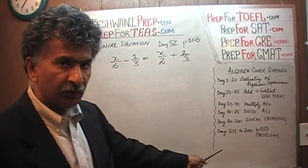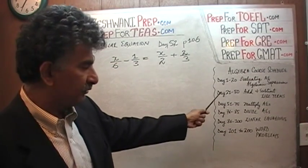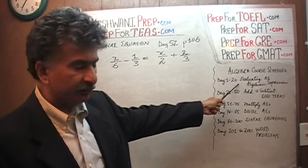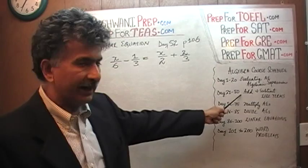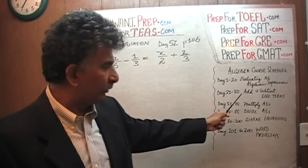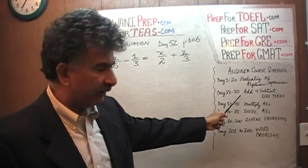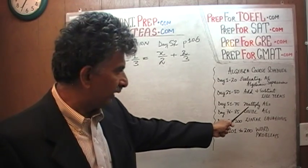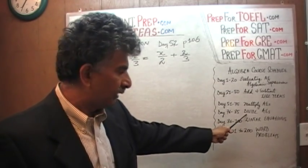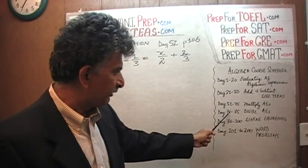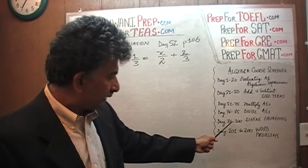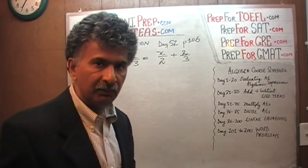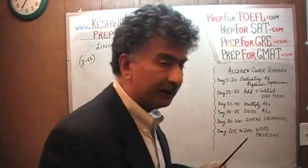Here is the course schedule. You will find these videos on my channel. Just look for algebra videos. The first 20 days we learn how to evaluate algebraic expressions. From day 21 through 50, we learn how to add and subtract algebraic expressions. From day 51 through 75, we learn how to multiply algebraic expressions. Then we learn how to divide algebraic expressions. And then finally, the last 15 days of the first part of the course, day 86 through 100, we learn how to solve linear equations.